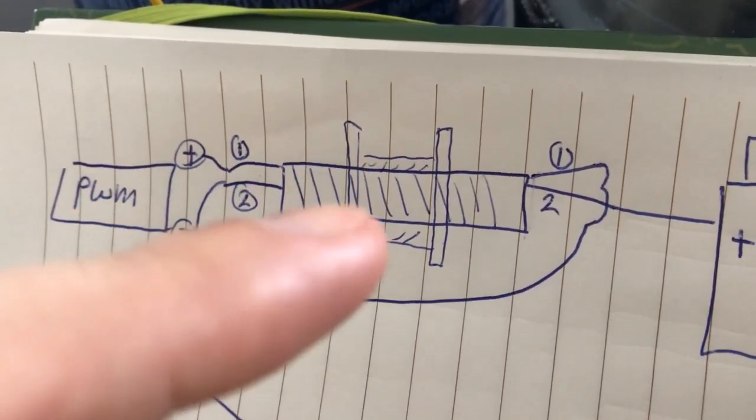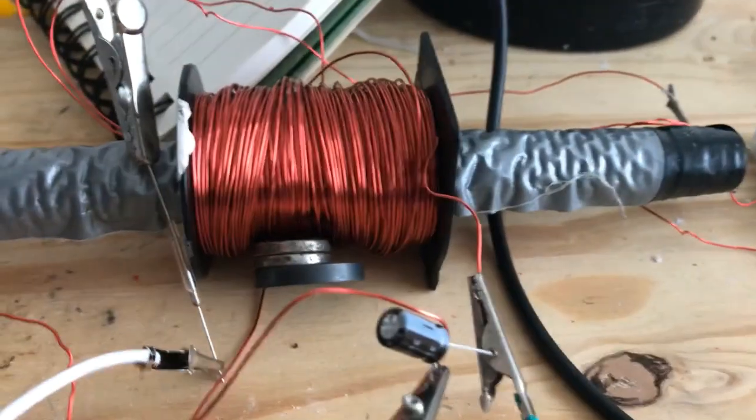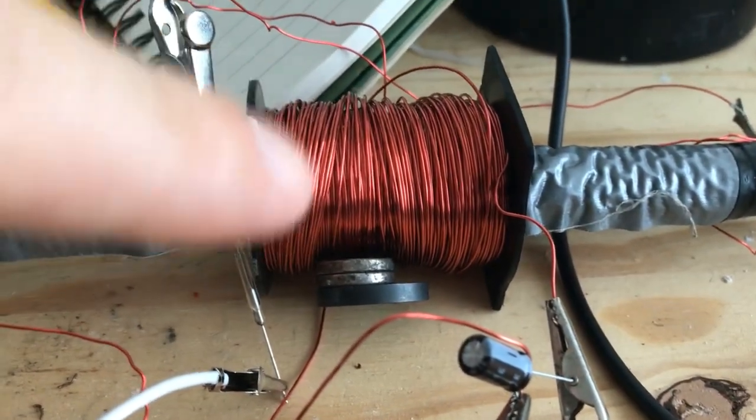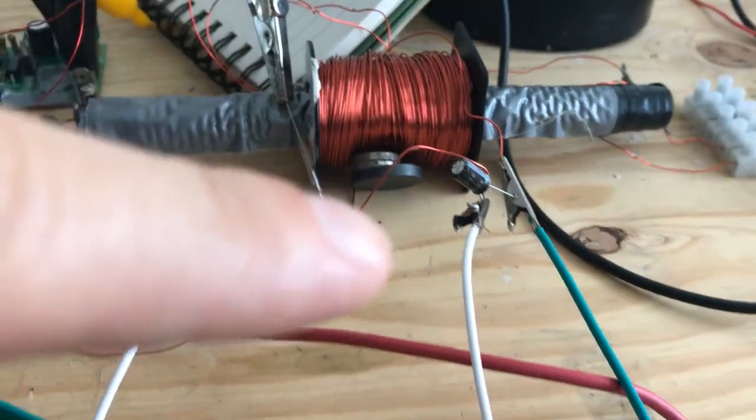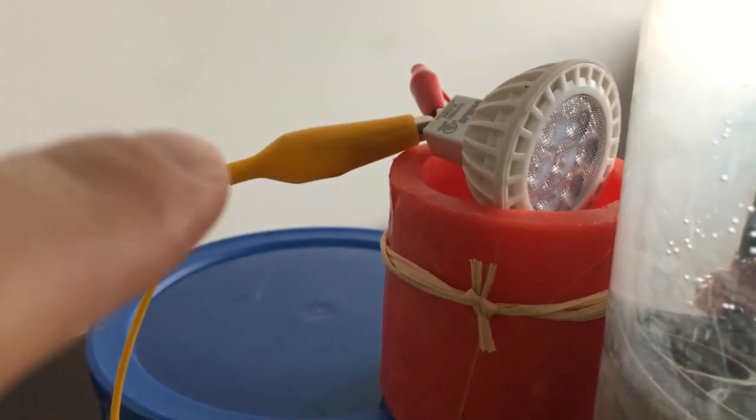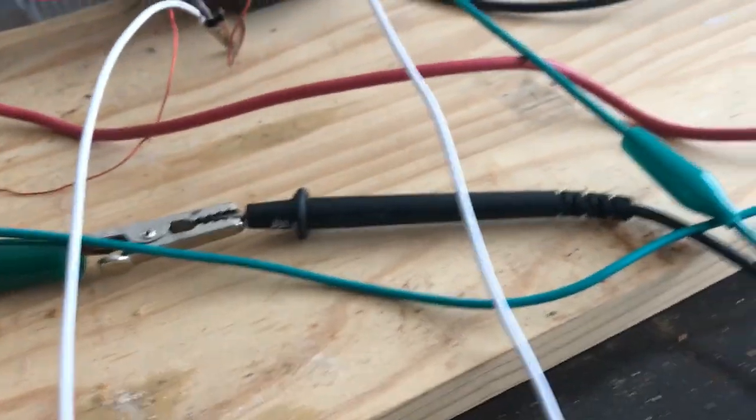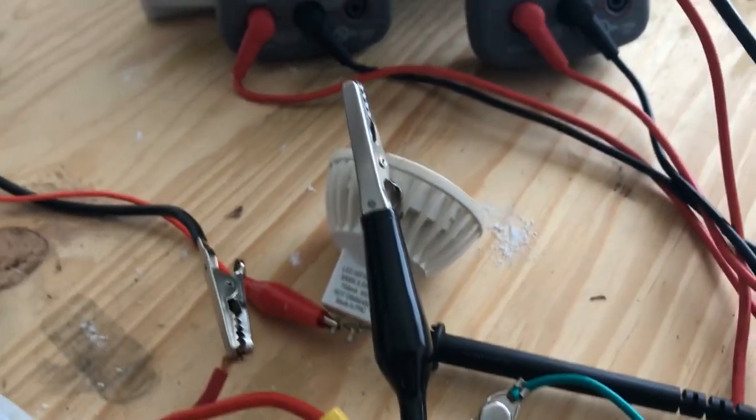That is a pickup coil. The pickup coil is right here. Ignore the magnets, it's just to make some sound. The pickup coil literally one end just goes to one side of the LED and the other end goes to the other side of the LED.